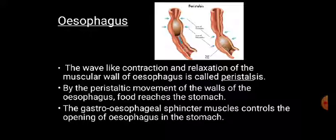The wave-like contraction and relaxation of the muscular wall of the esophagus is called peristalsis. Peristalsis moves the food bolus — which is the food we swallow from the buccal cavity in the form of a ball. The bolus passes down the esophagus by means of contraction and relaxation of the muscular wall, and because of this peristaltic movement, the food reaches the stomach through the esophagus.